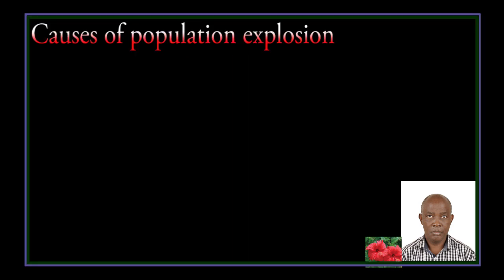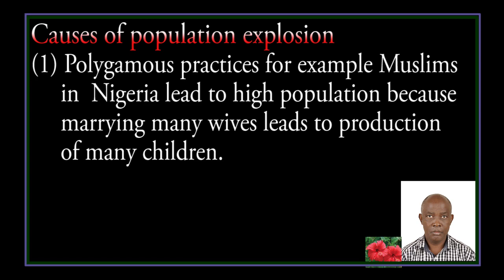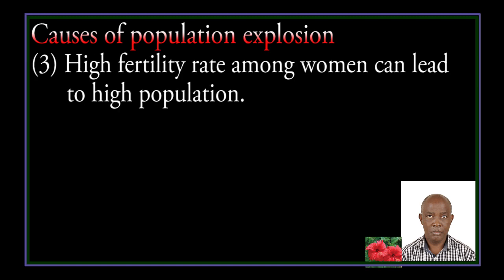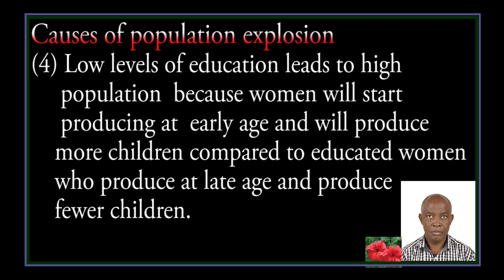Causes of population explosion: reduced infant mortality rate due to improved medical services such as immunization. High fertility rate among women can lead to high population. Low level of education leads to high population because women will start producing at an early age and will produce more children, compared to educated women who produce at a later age and produce fewer children.